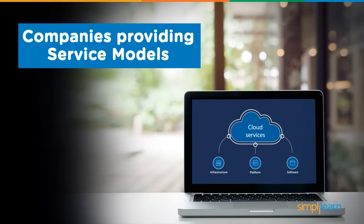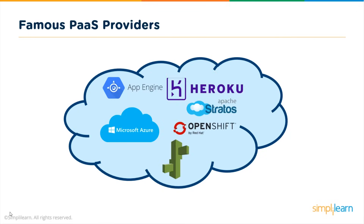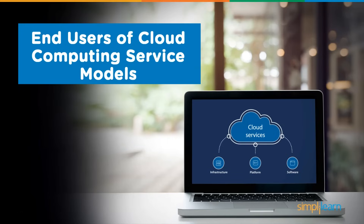Top companies providing these service models: famous IaaS providers include Amazon Web Services, Rackspace, Digital Ocean, Linode, and Microsoft Azure. Amazon offers features such as auto-scaling, cloud monitoring, and load balancing. Rackspace focuses primarily on enterprise-level hosting services. Famous PaaS providers include Heroku, Apache Stratos, OpenShift, and Microsoft Azure. Top SaaS providers include Google Apps, Salesforce, Cisco Webex, Dropbox, and many more.